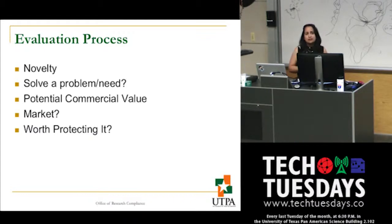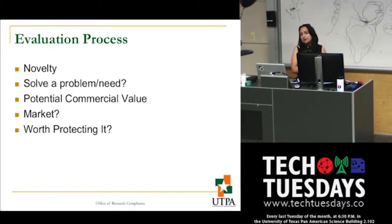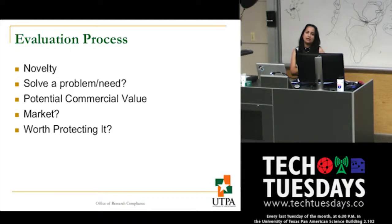When it comes to the evaluation process, the Office of Technology Transfer will evaluate the novelty of your invention: does it solve a problem or need in the community, what is its potential commercial value, is there a market for it, and is it worth protecting? If after all that evaluation the institution determines it's not worth protecting, the institution will release the invention back to you, and you're free to move forward on your own.